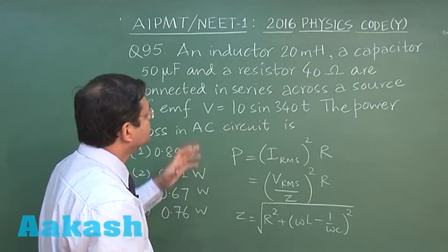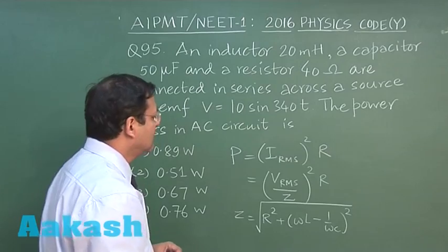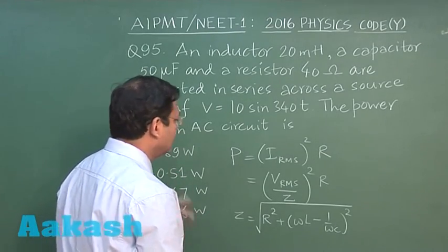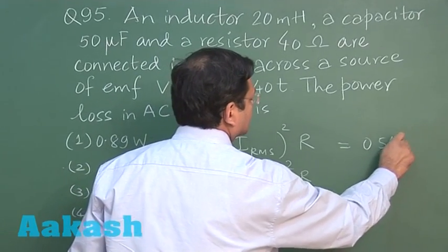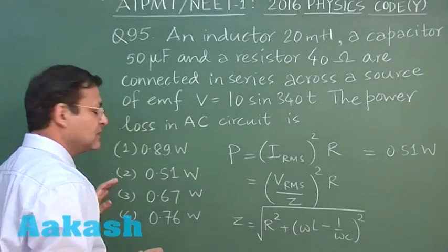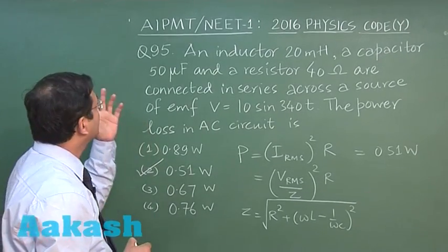Omega is 340 you can see here, and rest of the things have been given: value of l, value of c, everything. If you substitute that you can calculate and the value will finally come out to be 0.51 watt, so I will be marking the answer, this second one for this question.